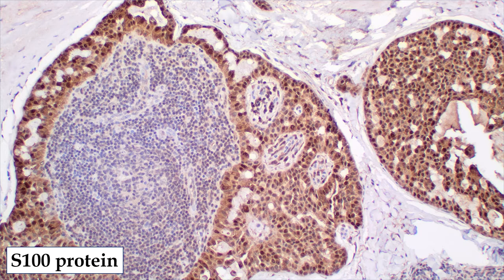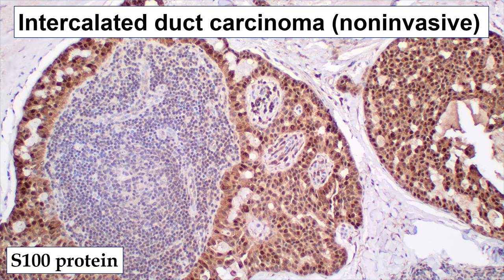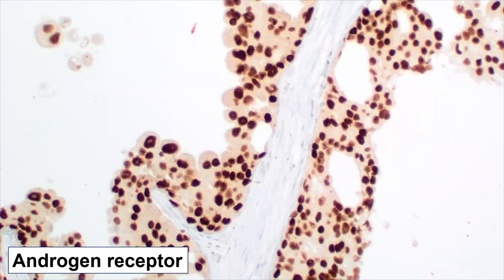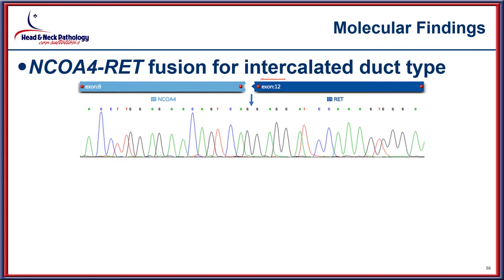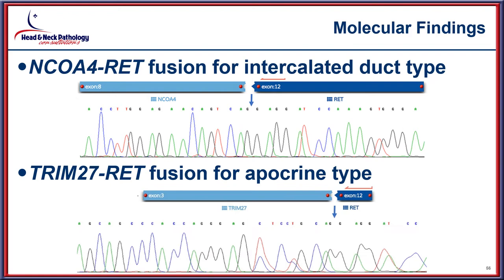The tumors are separated into two categories: the intercalated duct type, strongly positive with S100, either invasive or non-invasive; and the apocrine type, which shows strong androgen receptor reactivity. Molecularly, the NCOA4-RET fusion is seen in the intercalated duct type while the TRIM27-RET fusion is seen in the apocrine type — confirming they are two distinct lesions with different molecular bases.